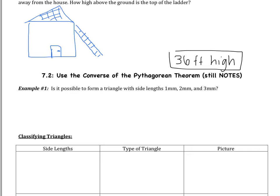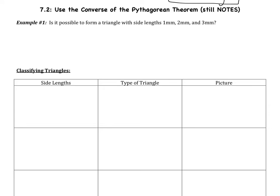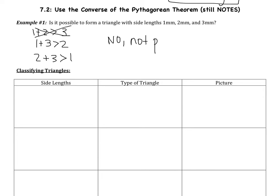That was all the Pythagorean Theorem. Now we're talking about the converse of the Pythagorean Theorem. Remember that the converse just means flip — take the statement you have and flip it. We're using the converse to classify triangles. First, a little review in example 1: is it possible to form a triangle with side lengths of 1 mm, 2 mm, and 3 mm? From last chapter, it's possible to form a triangle if the sum of two sides is greater than the third. 1 plus 2 has to be greater than 3 — that's not true, so it is not possible.